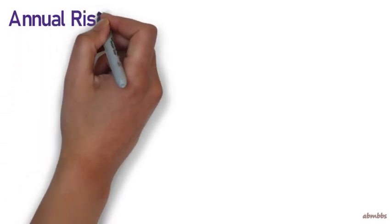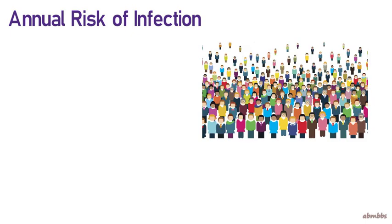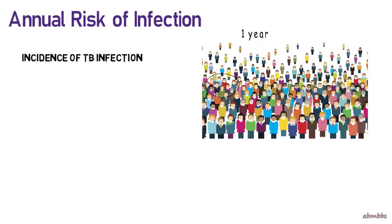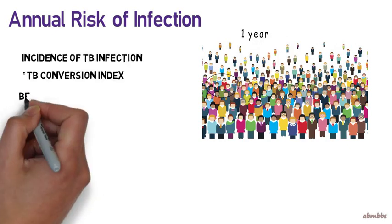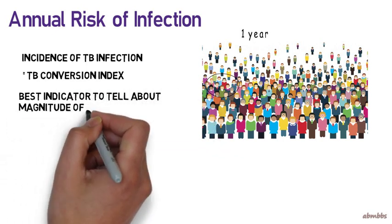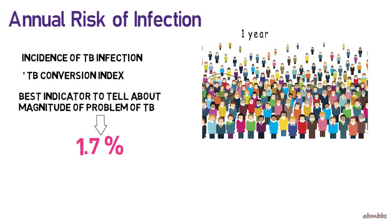You should know about something called Annual Risk of Infection (ARI) in relation to TB. It stands for the proportion of population that will be infected with TB in the course of 1 year. It tells about the incidence of TB infection and is also known as the tuberculin conversion index. It is the best indicator to tell the magnitude of the problem of TB in a population. In India, the ARI is 1.7%. For every 1% rise in ARI, 50 smear positive cases will be detected per lakh population.